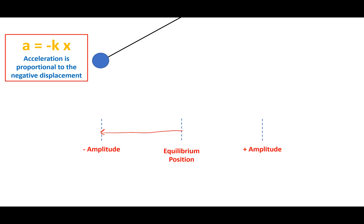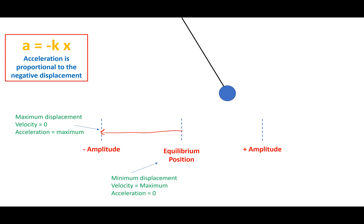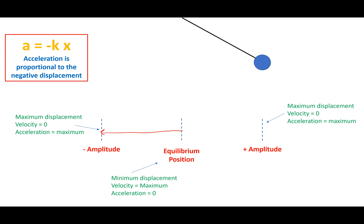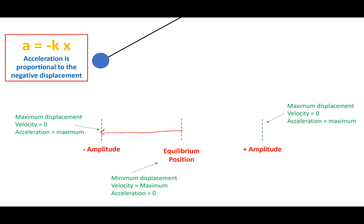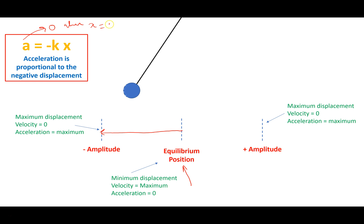The acceleration is proportional to the negative of the displacement. Since my displacement is its maximum negative, my acceleration will be its maximum positive. So my pendulum will accelerate towards the equilibrium position. When it hits the equilibrium position, it's at its maximum velocity, its minimum displacement. And since the displacement from the equilibrium position is zero at this point, the acceleration is zero when x equals zero.